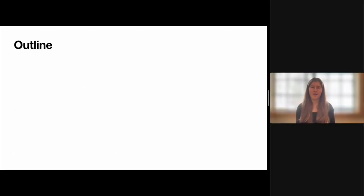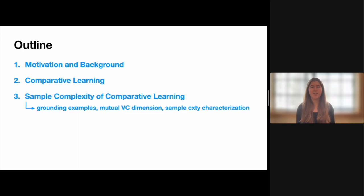We'll be structuring the talk as follows. I'll first provide some motivation and review the concepts of realizable and agnostic learning before introducing the definition of comparative learning as a generalization of these two tasks. We'll then move on to considering the sample complexity of comparative learning, where I'll walk through an example to demonstrate why existing methods used to analyze the sample complexities of realizable and agnostic learning cannot be easily applied to comparative learning. Building on this example, I'll introduce the mutual VC dimension, which is a variant of the VC dimension that we show is able to characterize the sample complexity of comparative learning as the main result of this paper.